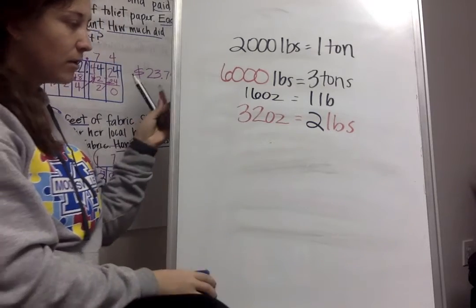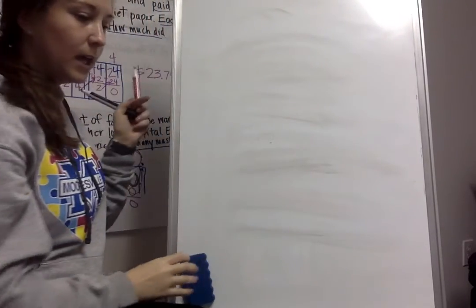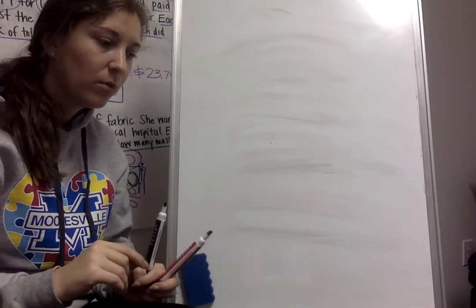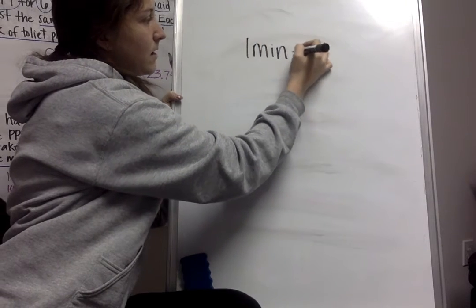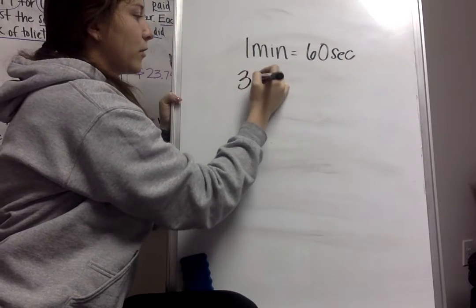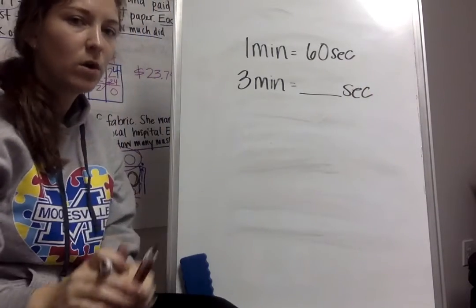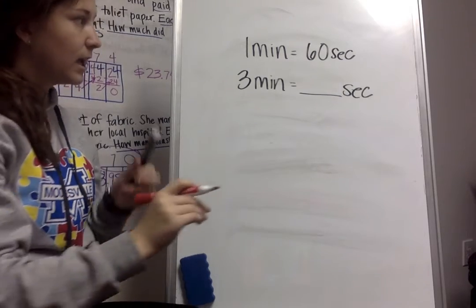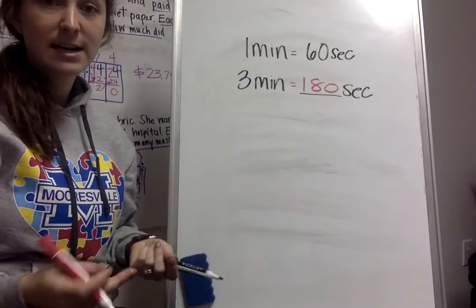The only other section that we have is time. And those are things like minutes, seconds, hours, things like that. So if I have one minute equals 60 seconds, three minutes would equal how many seconds? So what would I have to do here? I would have to do 60 times three. And I know that 6 times three is 18. I'd add that zero, so that would be 180 seconds.